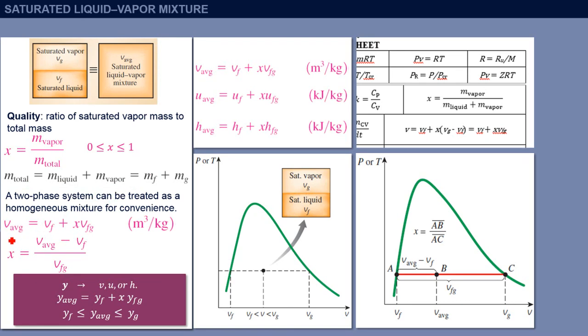If I want to calculate the average specific volume, I can calculate it using this equation. It is equal to v_f plus quality into v_fg. V_fg is the difference of v_g and v_f.